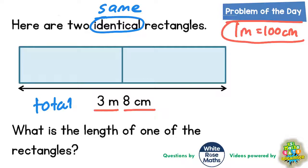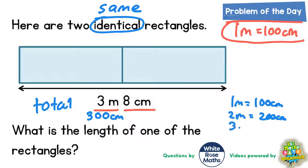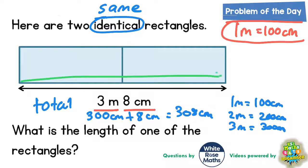Three meters is 300 centimeters because one meter is 100 centimeters, so two meters is 200 centimeters and three meters is 300 centimeters. So 300 centimeters plus an extra eight centimeters is 308 centimeters. The total distance all the way across is 308 centimeters.